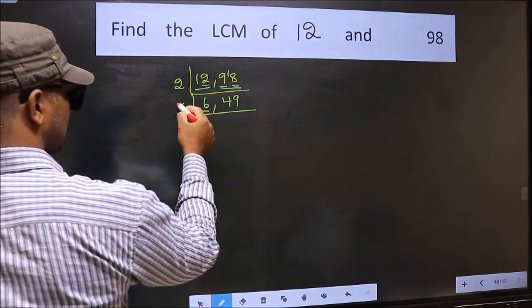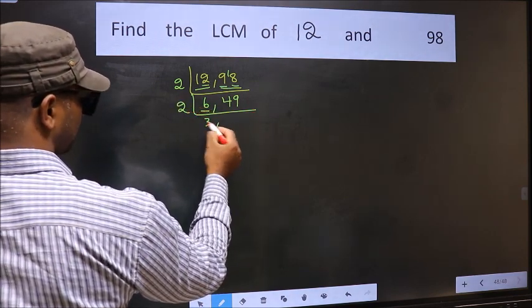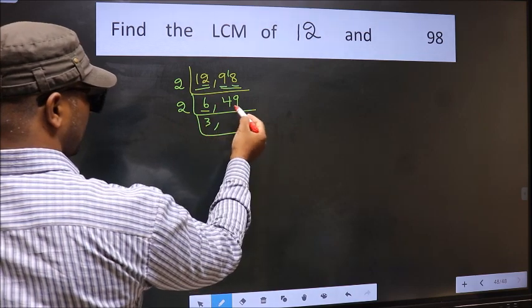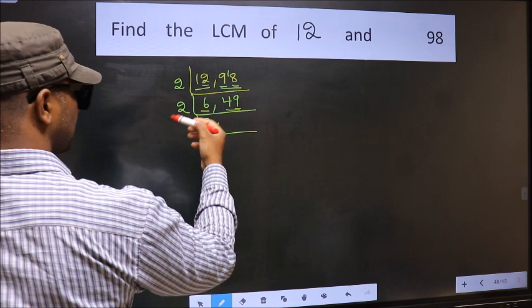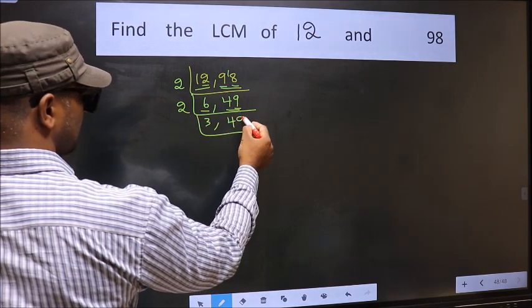Now here we have 6. 6 is 2, 3, 6. The other number 49, last digit 9 is not even so this is not divisible by 2. So we write it down as it is.